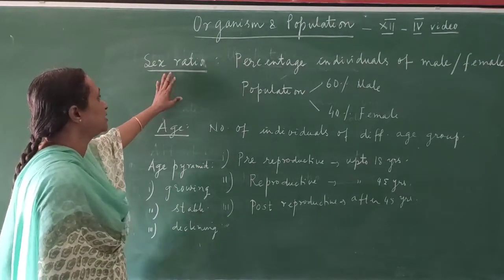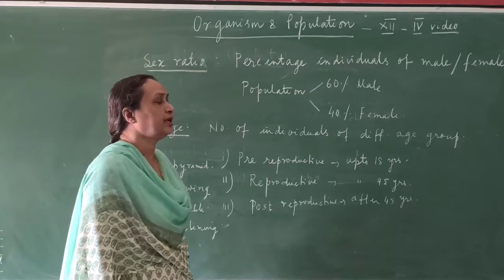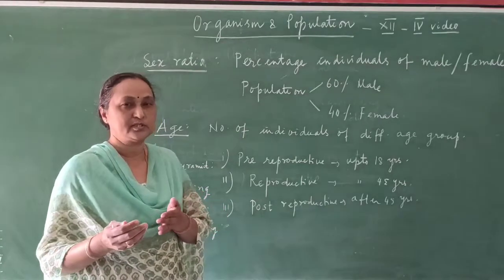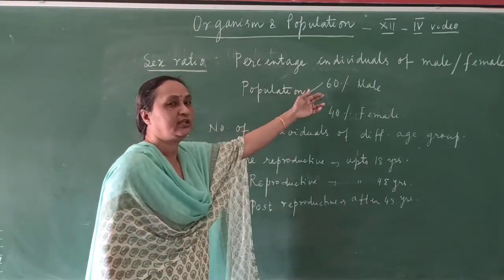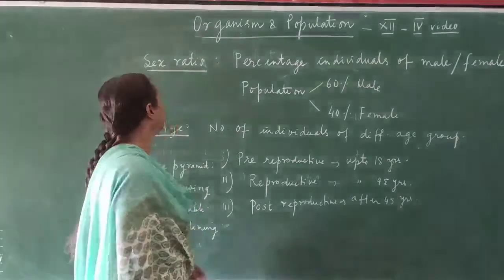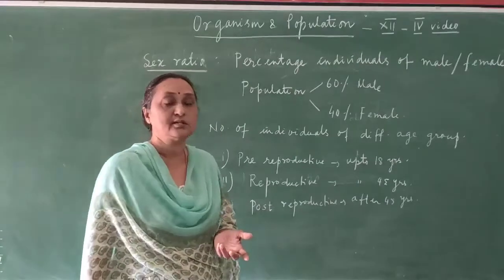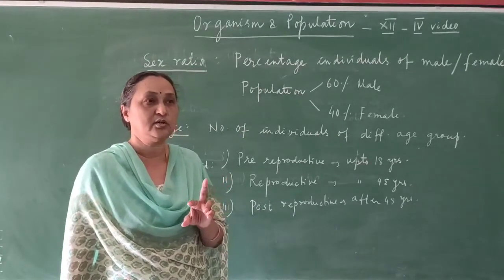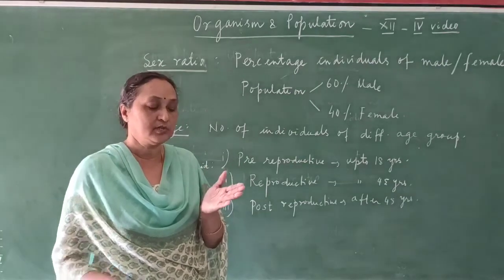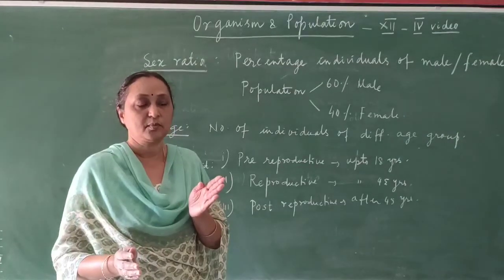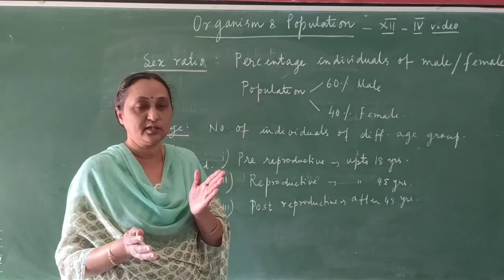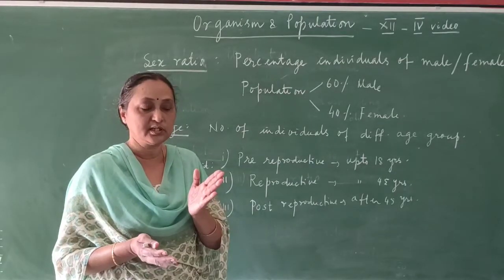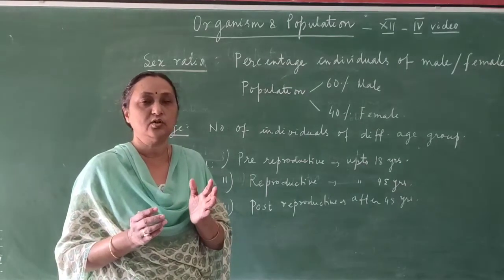The next attribute of a population is sex ratio. Sex ratio means the percentage of individuals that are male and female. If you take one population, we find out what is the number or percentage of males and what is the percentage of females. For example, in a population there may be 60% males and 40% females — that is called sex ratio. It is very important to find out the sex ratio. The government takes a record of the sex ratio of all different states in India. If there is a difference in the sex ratio, some problem exists, because the number of males and females should be equal. If the number of females is too less and the number of males is more, then it will be difficult for males to find a female to marry. So sex ratio is also another important attribute of the population.